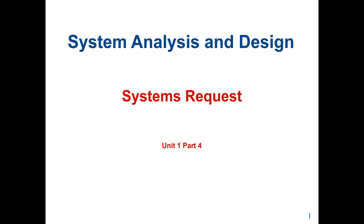These lectures cover the system request. A system request is a document that describes the business reasons for building a system and also the value that the system is expected to provide. Once the project sponsor identifies a project that meets an important business need, he or she can identify the business requirement and the business value of the system. Then it's time to formally initiate the project. In most organizations, project initiation begins by preparing a system request.